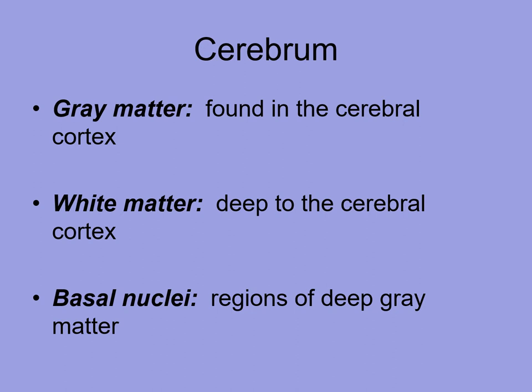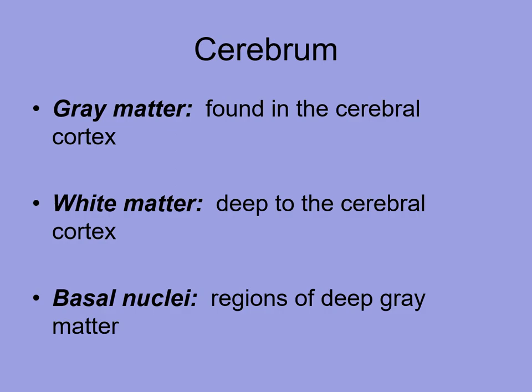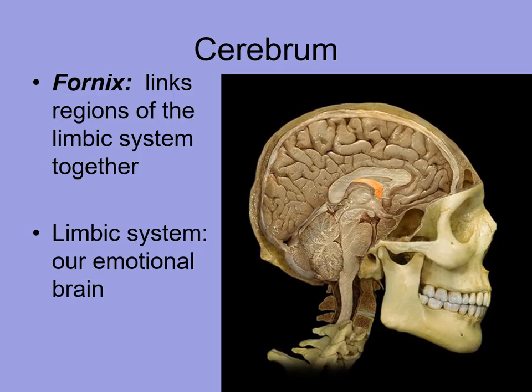One interesting thing about the cerebrum is that gray matter is found in the cerebral cortex area, the outermost region, and white matter is deeper to that. Basal nuclei are regions of gray matter that are deep within the white matter. This is the reverse of what you will see in the spinal cord. In this view, the orange shows the gray matter and the deep gray matter, while the white matter is deeper.